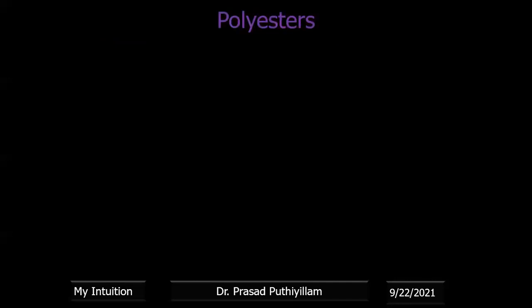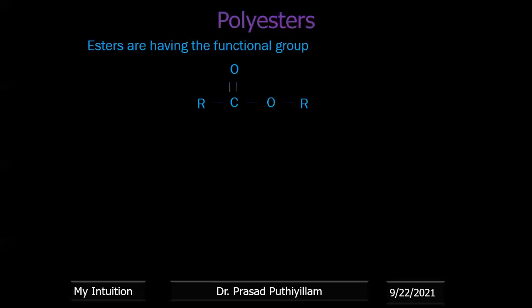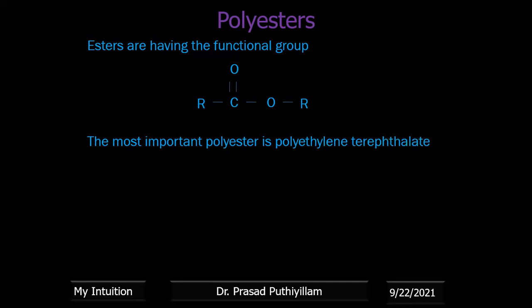Polyesters is the next polymer group. Esters have the functional group –C(=O)–O–, connected on both sides to R groups or aromatic groups. When this ester linkage is present repeatedly in a polymer chain, we call it a polyester.